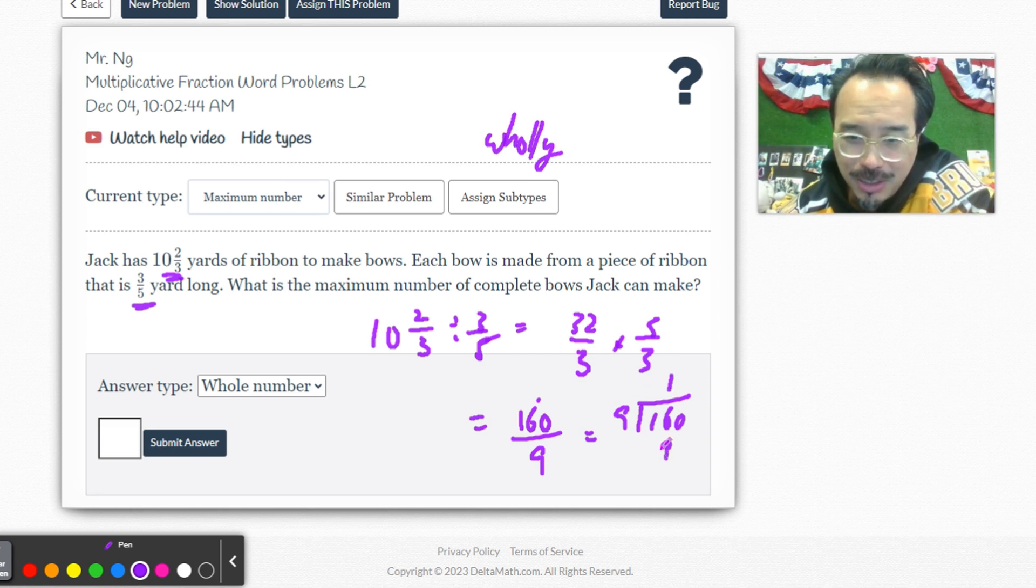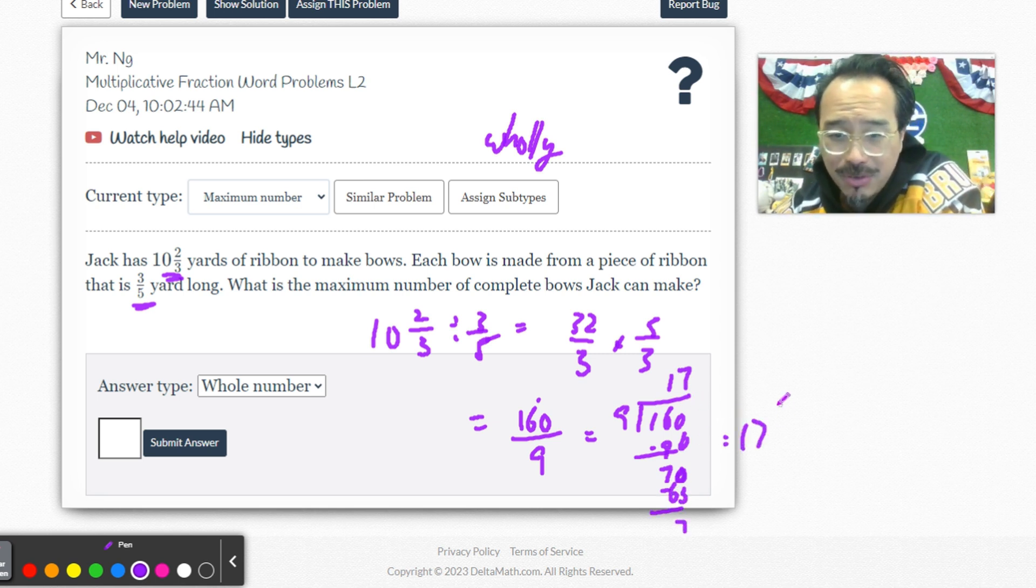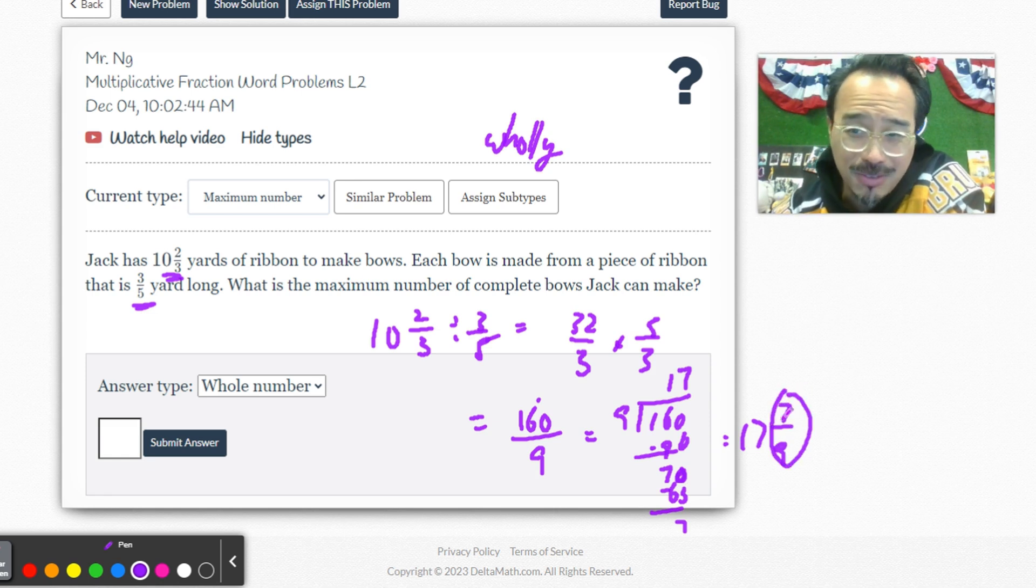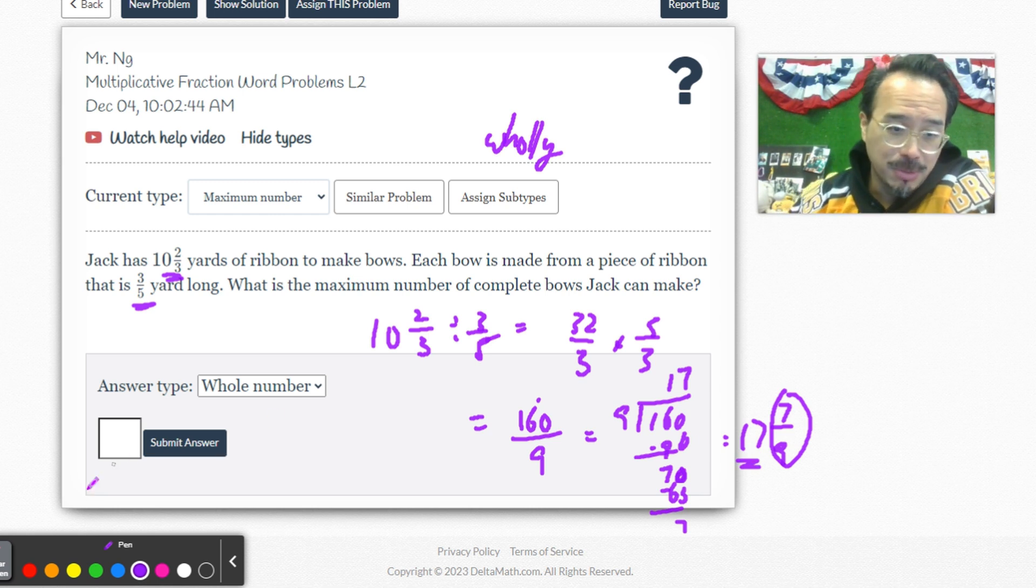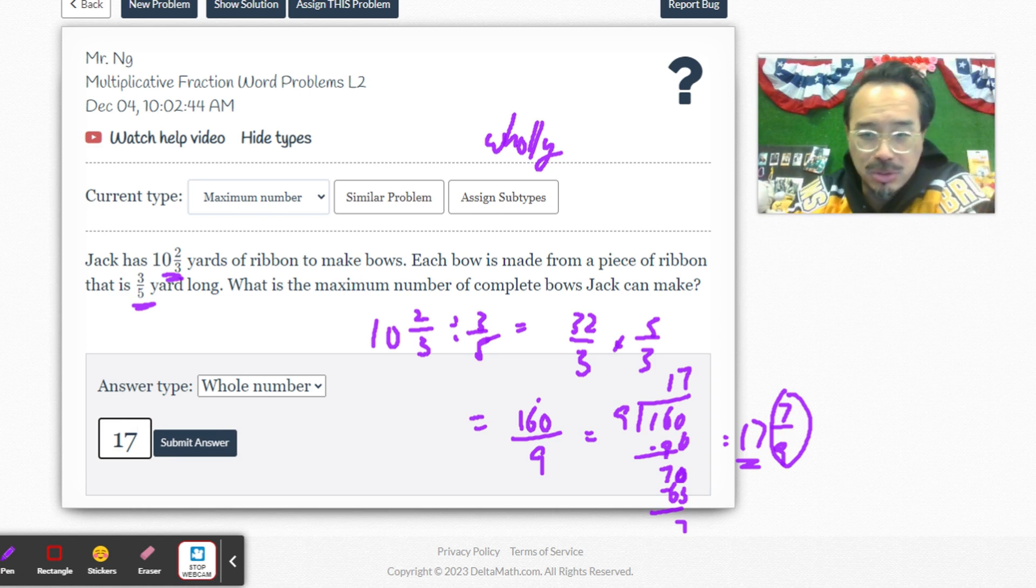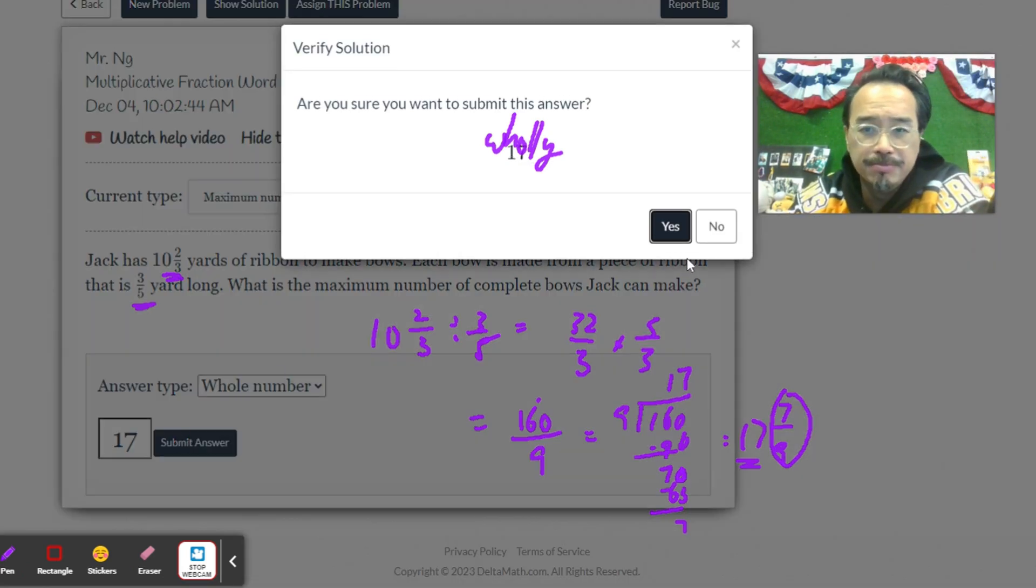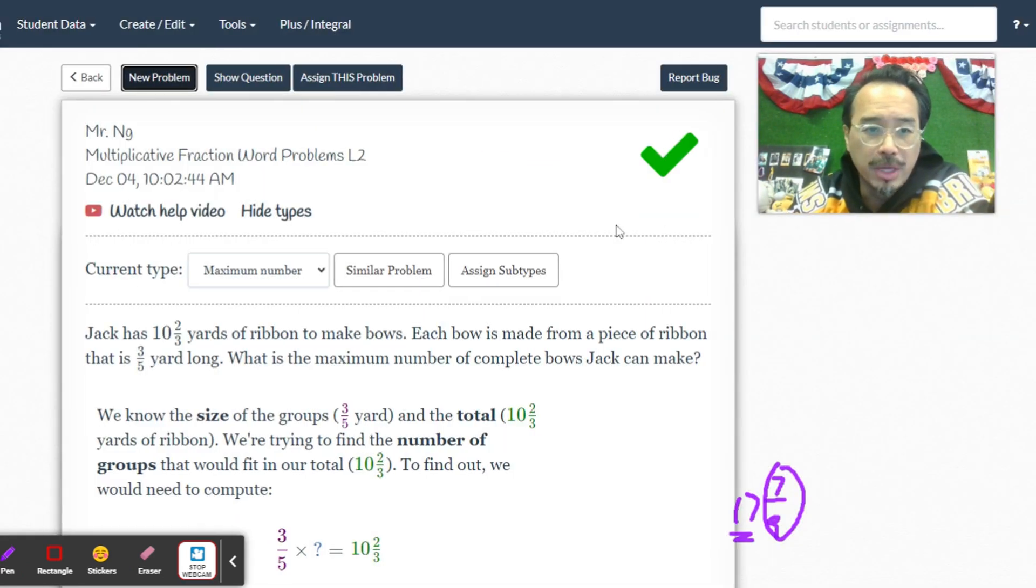Nine times one is nine. Bring the zero down. Nine times seven is 63, so that's seven. Technically it's 17 and seven-ninths, but you cannot use this. Even though in real life no one can tell seven-ninths of a bow, from a school mathematics standpoint we can only make 17 bows.